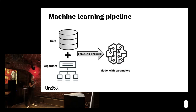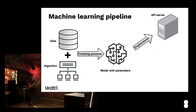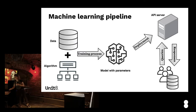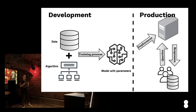We also have our algorithm, chosen based on our task specification. We apply that algorithm to our data in the training process, which produces a model with learned parameters — our prediction function. When our prediction function is ready, we can deploy it to a production environment where final users may start to use it. If they send a query with unlabeled input, the server will respond, giving them an assignment to a category. Everything on the left side we can call the development stage, and what happens on the right side is the production stage.